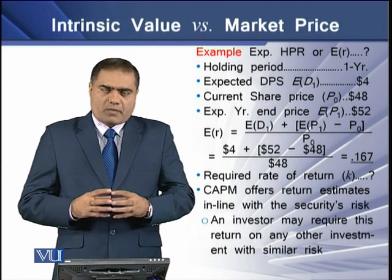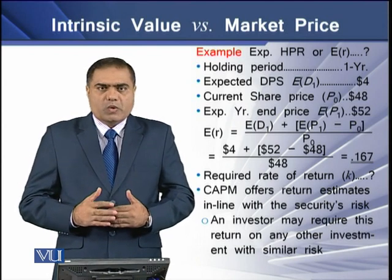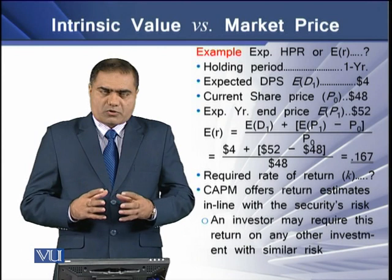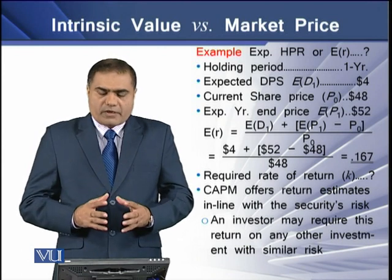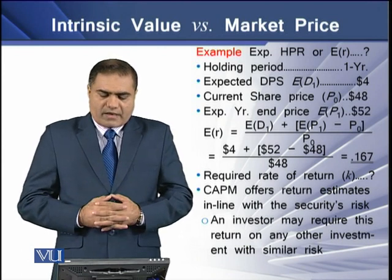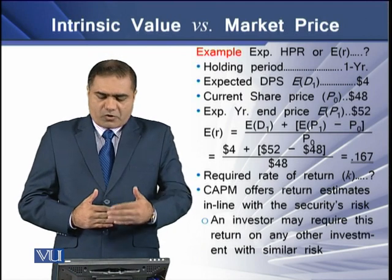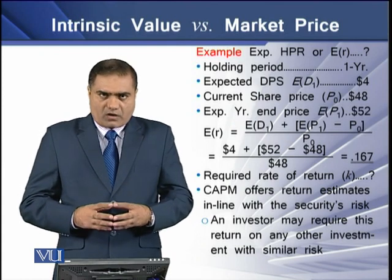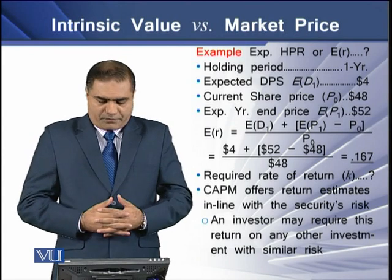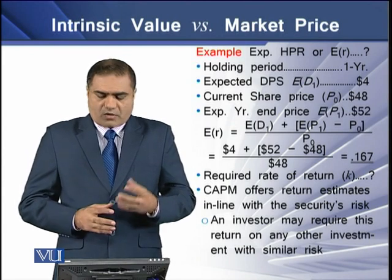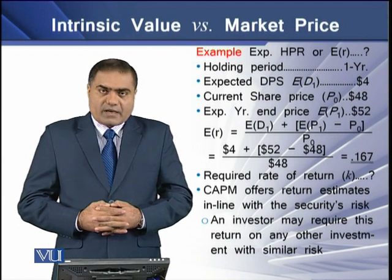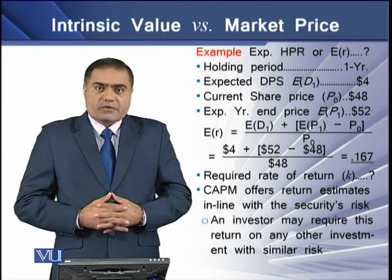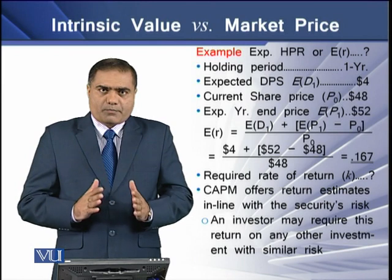The example is about determining the expected holding period return, or simply the expected return. For that purpose, we assume that the investor's holding period is one year. He expects to have a dividend at the end of the year of $4 — that is the expected dividend, D1. The current share price, P0, is $48, and it is expected that at the end of the year the stock will be worth $52, termed as P1.